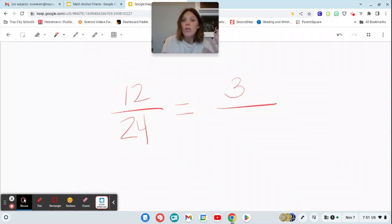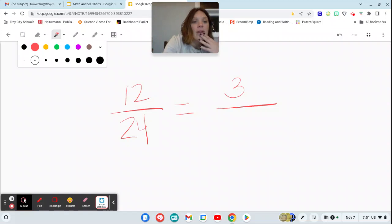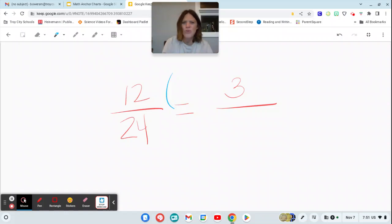So similar rules apply to numerators and denominators to make them equivalent. So I'm going to ask myself, all right, well, what rule applies to 12 and 3? I know that 12 divided by 4 is 3.